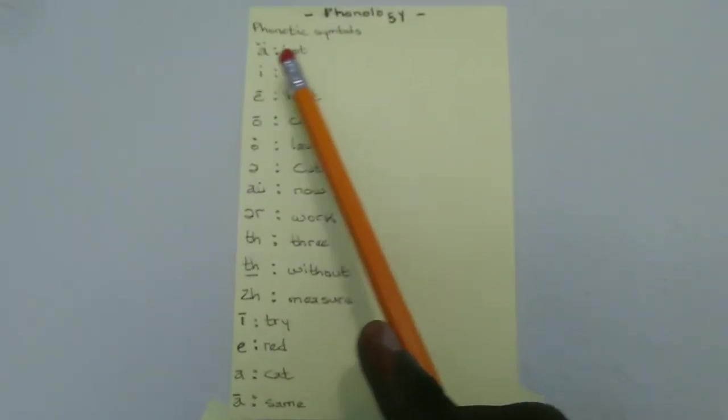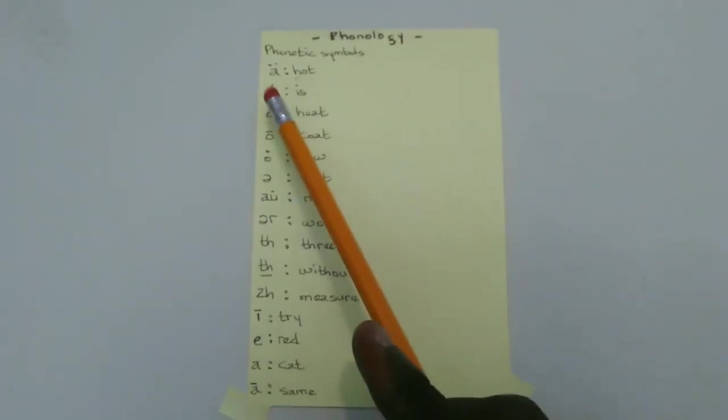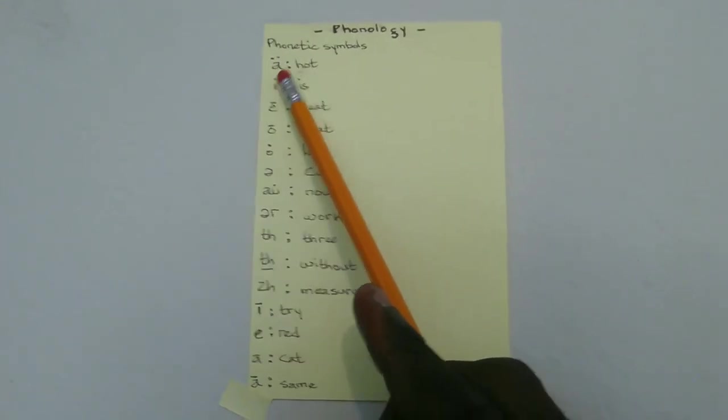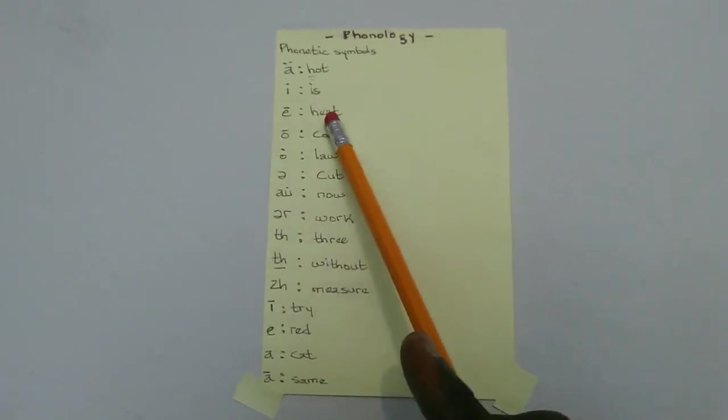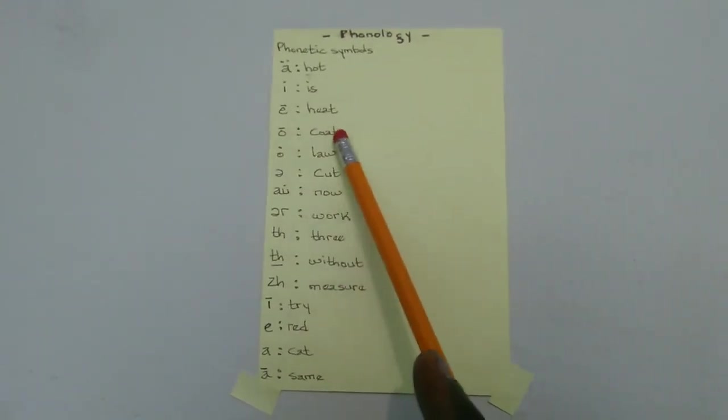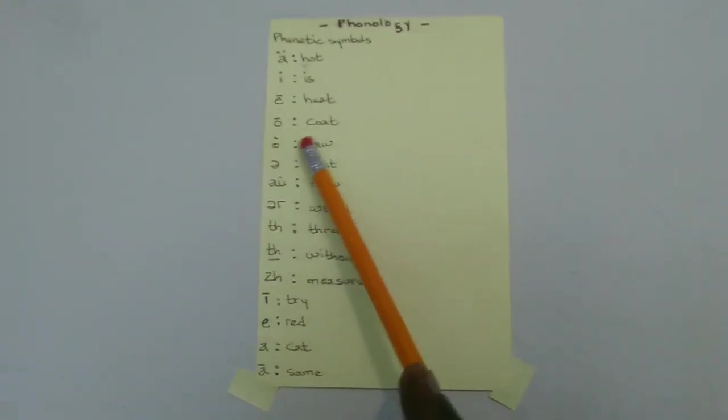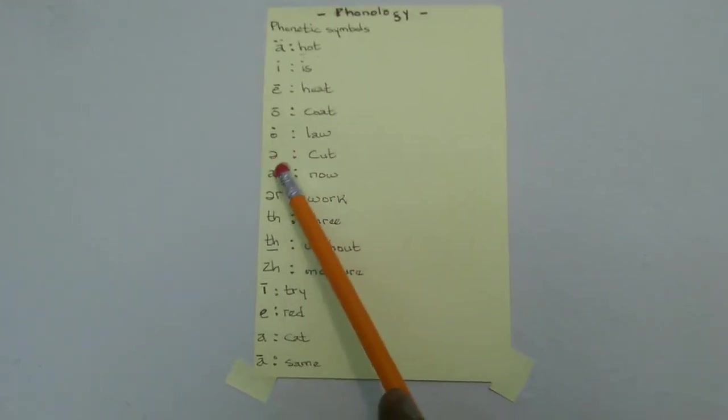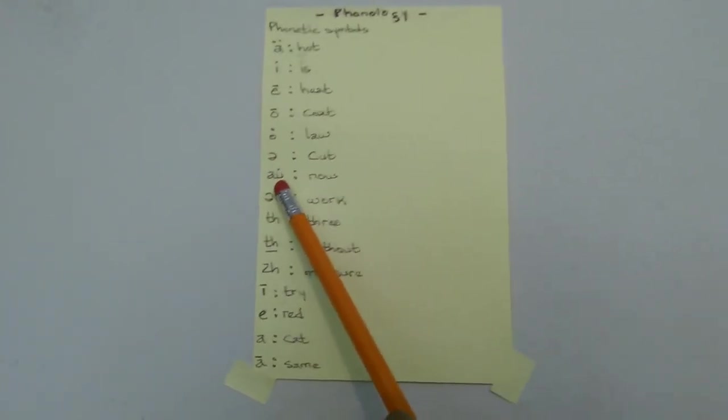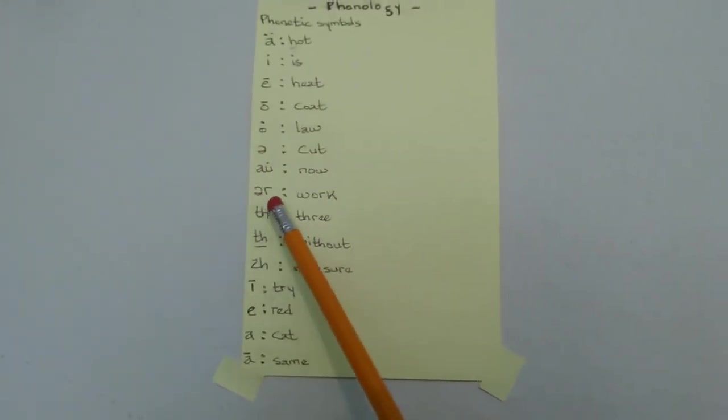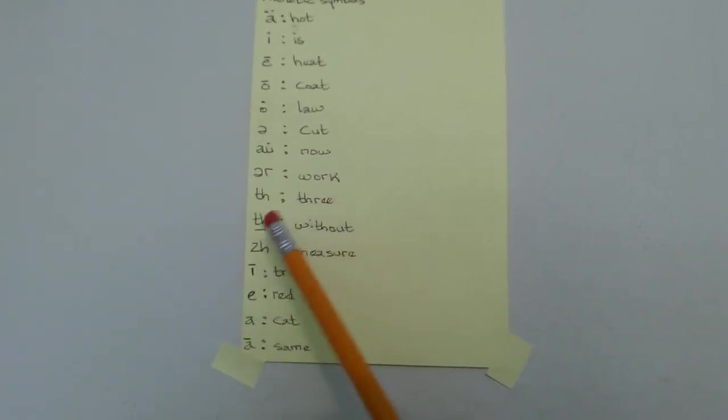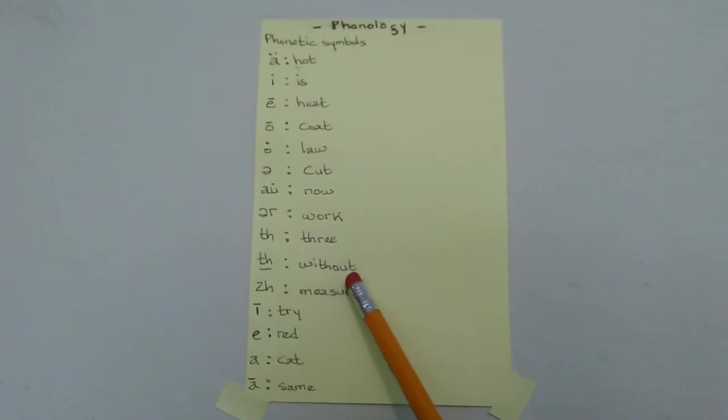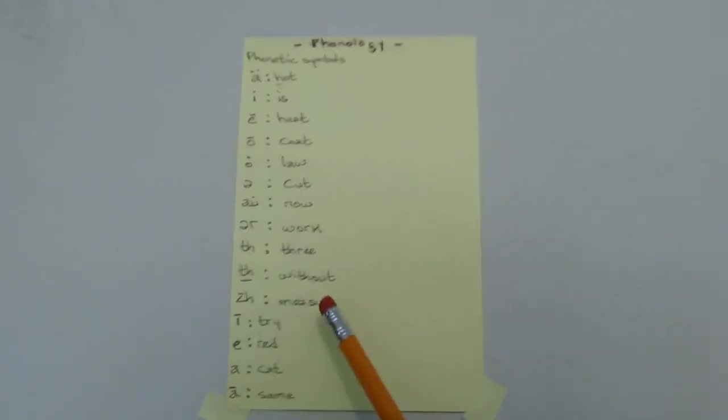As you can see: 'a' as in 'hot', 'a' as in 'is', 'e' as in 'heat', 'o' as in 'coat', 'o' as in 'law', 'uh' as in 'cut', 'al' as in 'now', 'er' as in 'work', 't' as in 'three', 'th' as in 'without', 'j' as in 'measure', 'i' as in 'try', 'e' as in 'red', 'e' as in 'cat', 'a' as in 'same'.